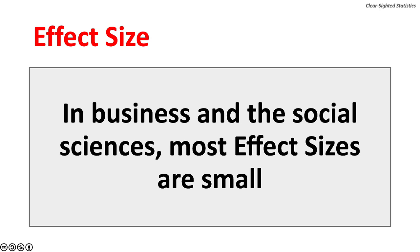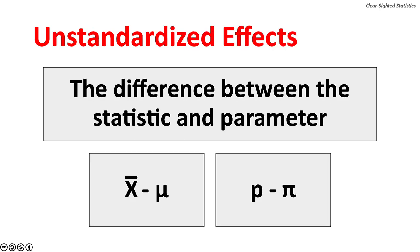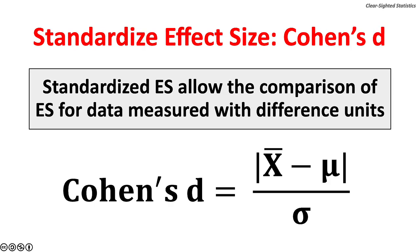In business and the social sciences, most effect sizes are small. An unstandardized effect is the difference between the statistic and the parameter — between the sample mean x-bar and the population mean mu, or between the sample proportion p and the population proportion pi. Unstandardized effect sizes depend on the units of measure for the statistic and parameter, such as monetary value, weight, height, or time. Because of this, one cannot compare unstandardized effect sizes for tests using different units of measurement. Cohen's D is a standardized effect size. The advantage of a standardized effect size like Cohen's D is that it allows comparison of effect size for data measured with different units. Cohen's D is the absolute value of the sample mean minus the population mean, over the standard deviation, and can use either the population or sample standard deviation.